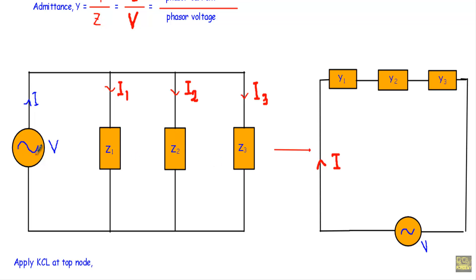In this circuit we apply an RMS voltage V, and as a result we get a total current I. This current I divides into I1, I2, and I3 through the impedances. Current through Z1 is I1, current through Z2 is I2, and current through Z3 is I3.